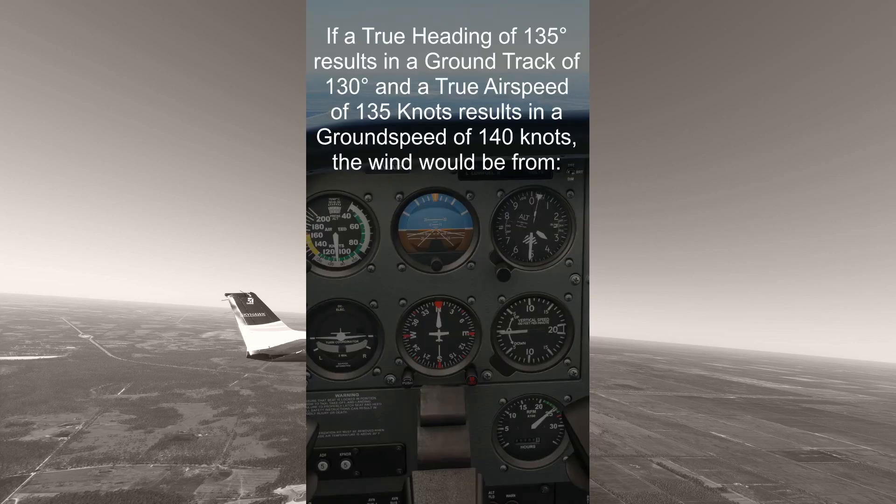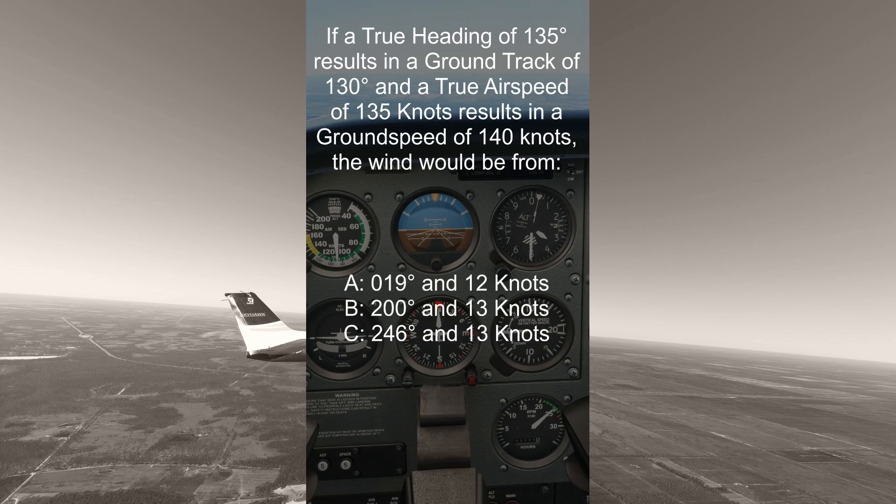If a true heading of 135 degrees results in a ground track of 130 degrees and a true airspeed of 135 knots results in a ground speed of 140 knots, the wind would be from which one of these options?